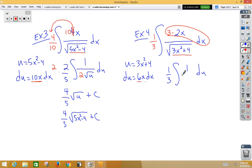I have 1 over root u. Well, I'm going to need to divide by 2 on the inside, so I'm going to multiply by 2 on the outside. I get a 2 thirds root u plus c, or 2 thirds root 3x squared plus 4 plus c.